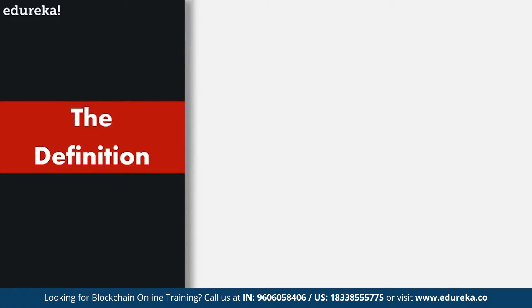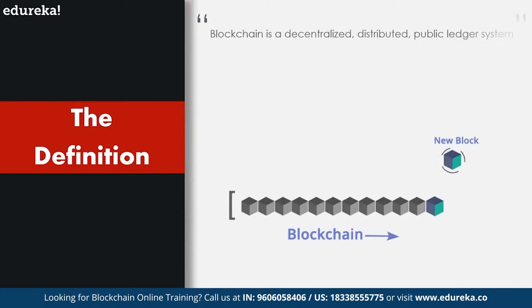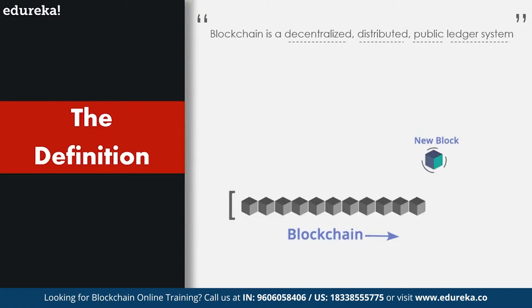Let's start with a simple definition of blockchain technology. Blockchain is a decentralized, distributed, public ledger system. Now let's break down the definition and understand each and every technical term.